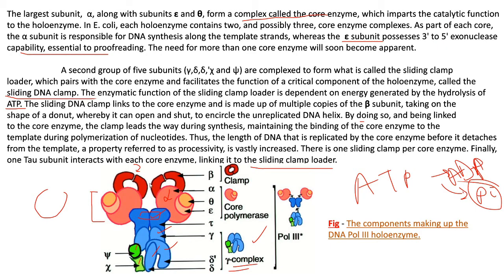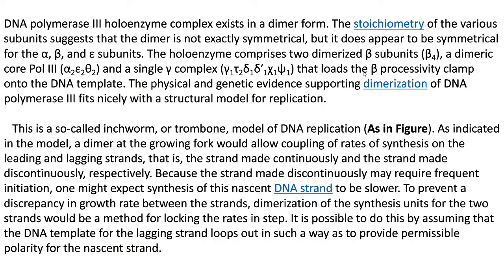The tau subunit interacts with each core enzyme, linking it to the sliding clamp loader. The whole DNA Pol 3 holoenzyme complex exists in a dimer form — you can see it can be divided into two equal parts. The stoichiometry of the various subunits suggests the dimer is not exactly symmetrical, but it does appear symmetrical for the alpha, beta, and epsilon subunits. The holoenzyme comprises two dimeric beta subunits, a dimeric core (alpha₂, epsilon₂, theta₂), and a single gamma complex composed of gamma₁, tau₁, delta₁, delta prime₁, chi₁, and psi₁, which loads the beta processivity clamp onto the DNA template.